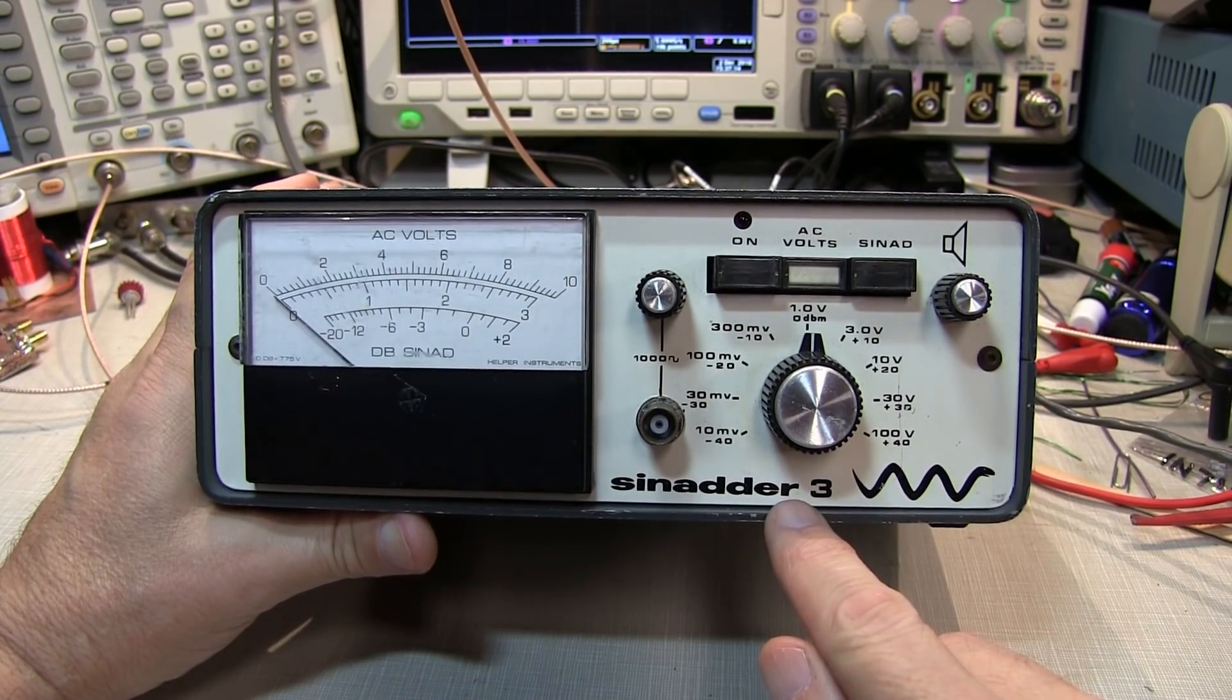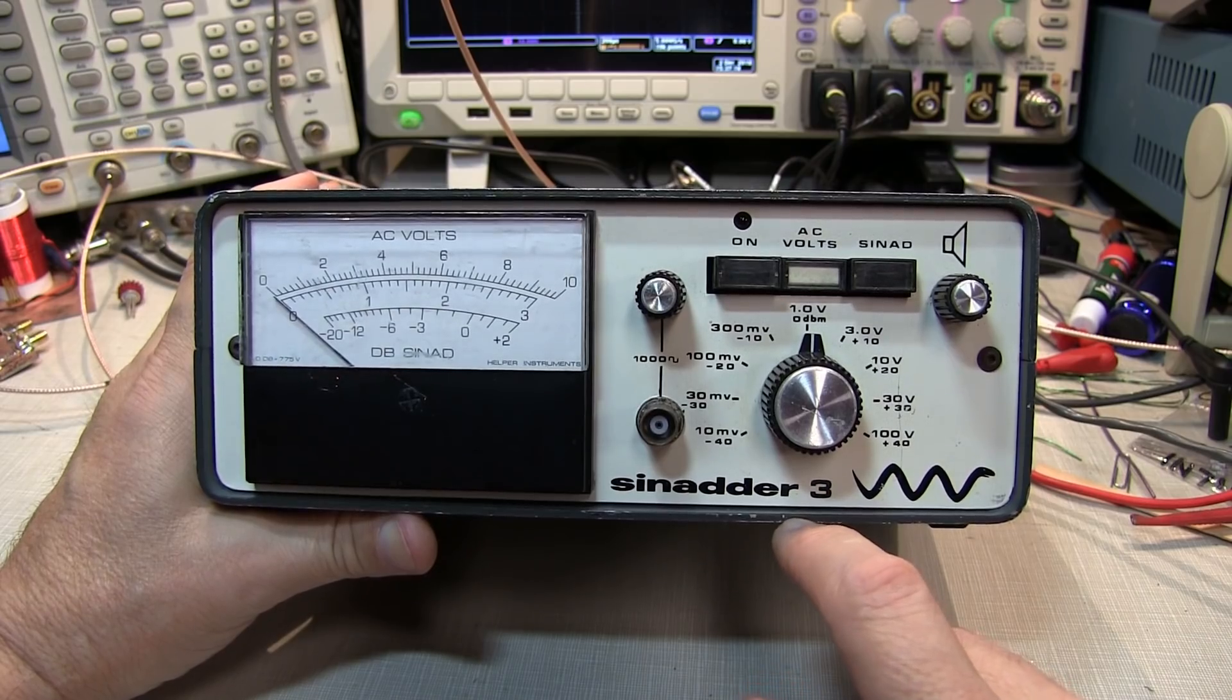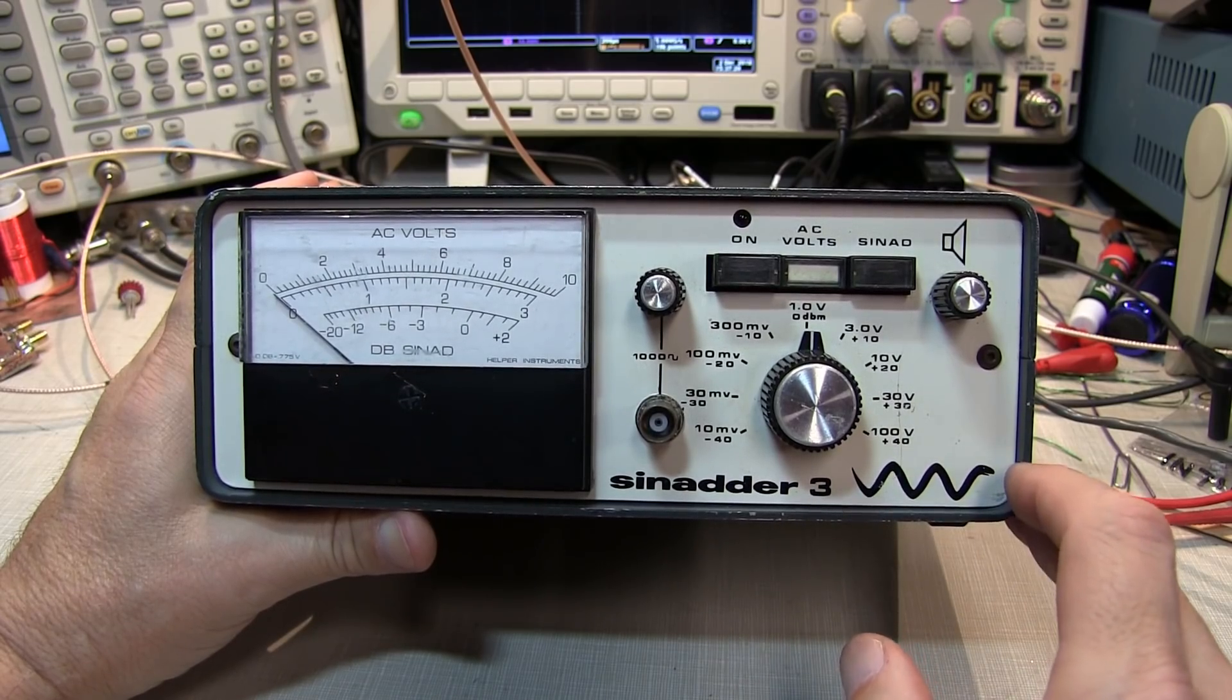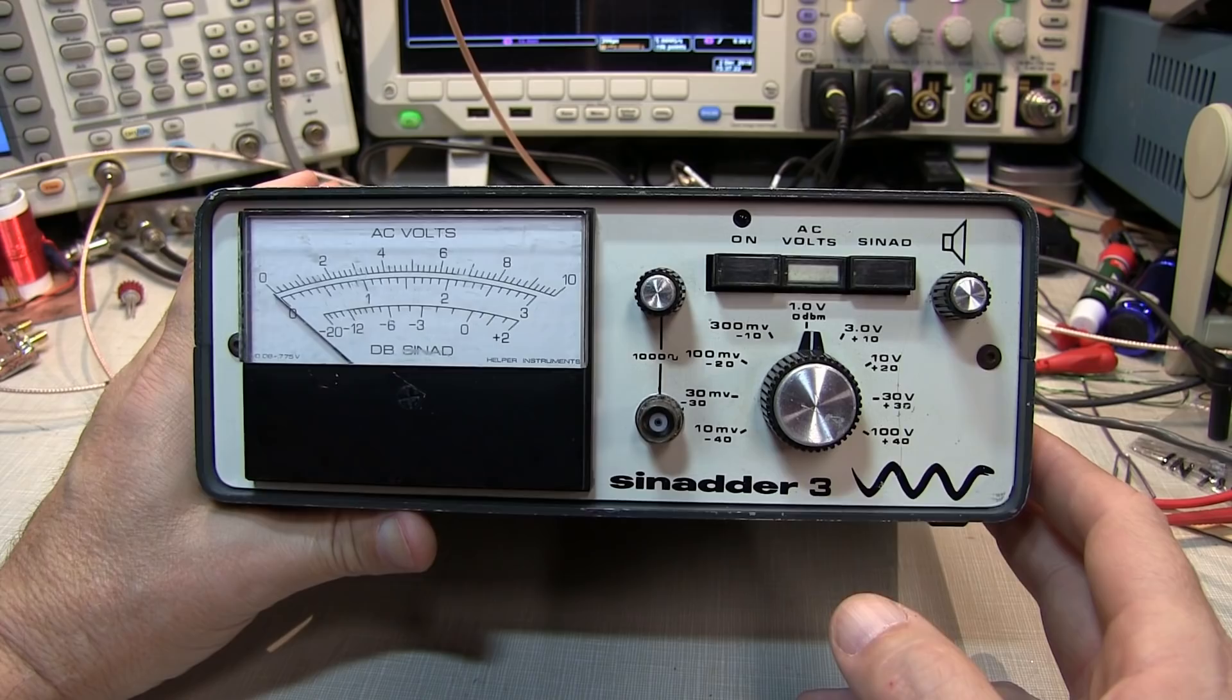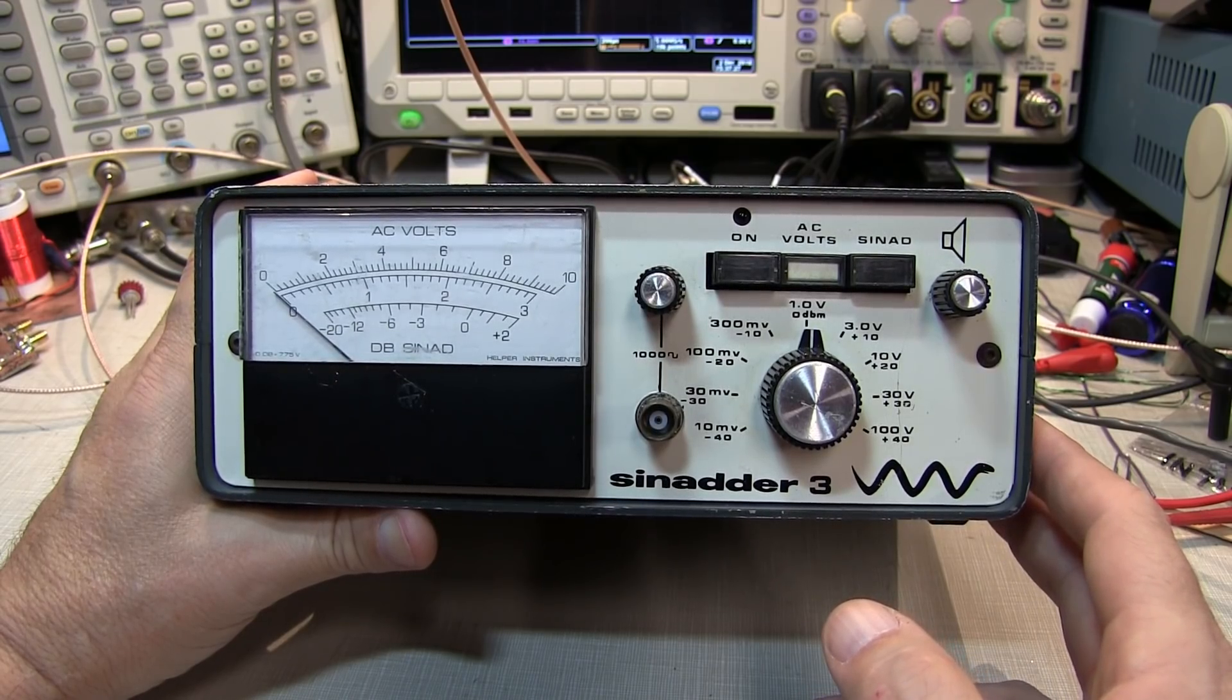Today we're going to take a look at the Sinadder III, a piece of equipment that was made by Hepler Instruments, which sadly went out of business about 20 years ago. But this instrument is really useful when aligning radio receivers, as it has three instruments essentially in one.